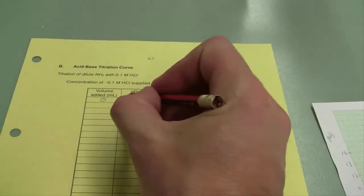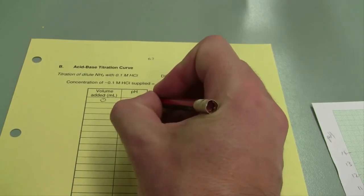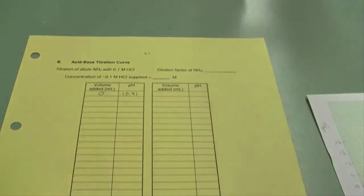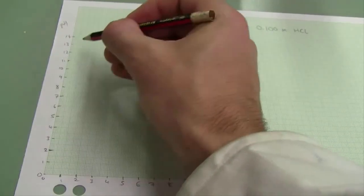Then take an initial reading, volume zero, record the pH of your solution, and plot that on a graph. You need to plot this graph as you go throughout the experiment.